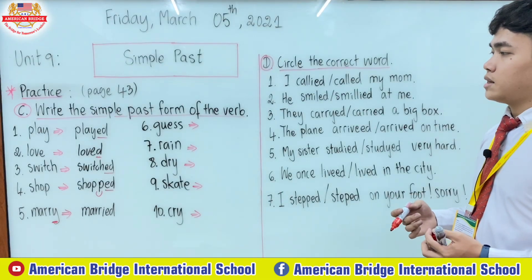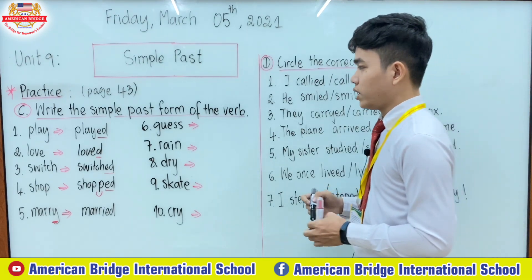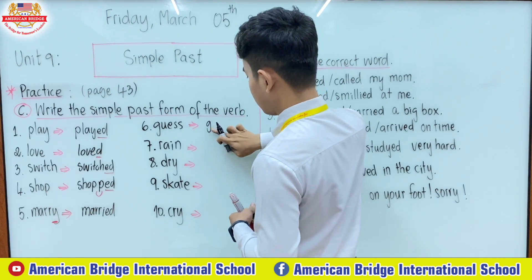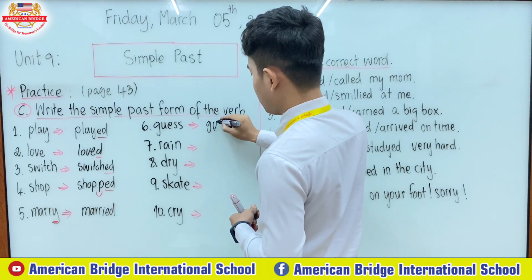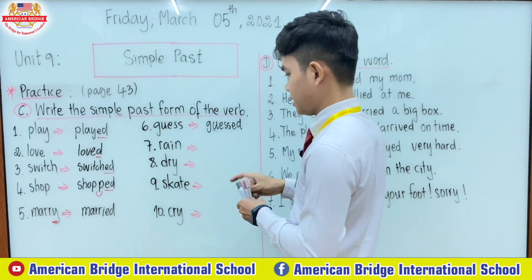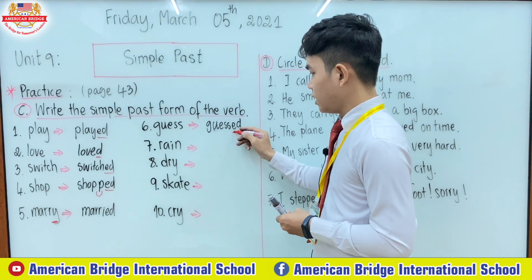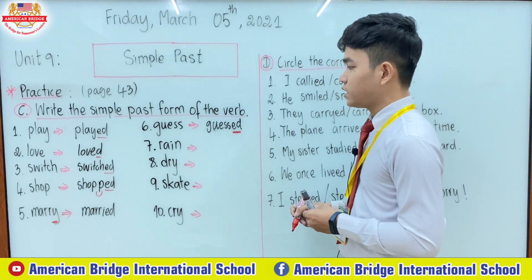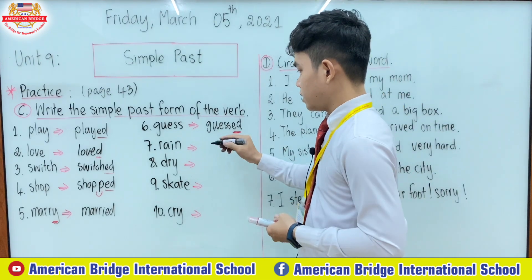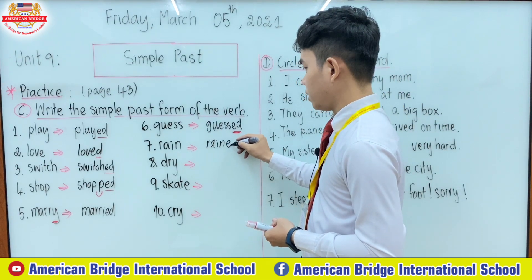Number six: the verb 'guess'. You just add only -ed — g-u-e-s-s-e-d. Guessed. We add -ed. Number seven: the verb 'rain'. For the verb 'rain', we just add only -ed.